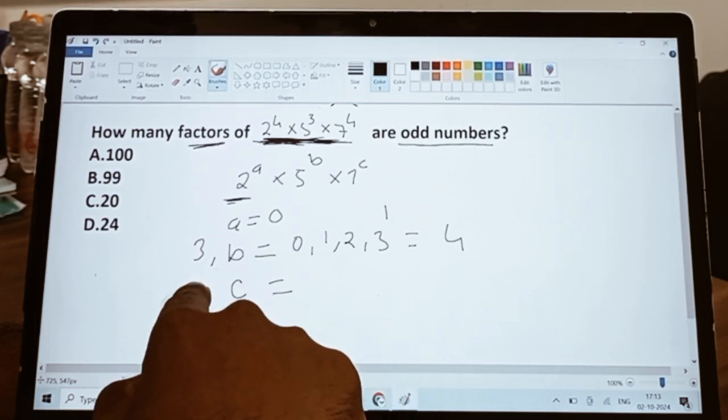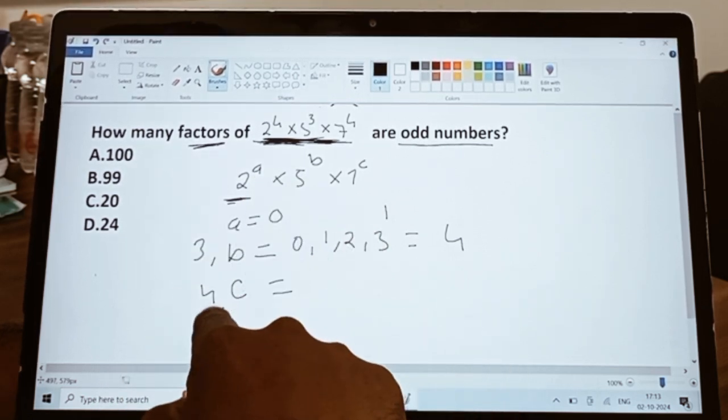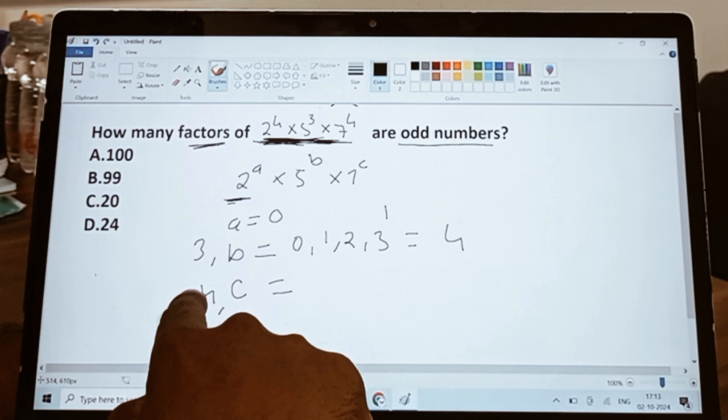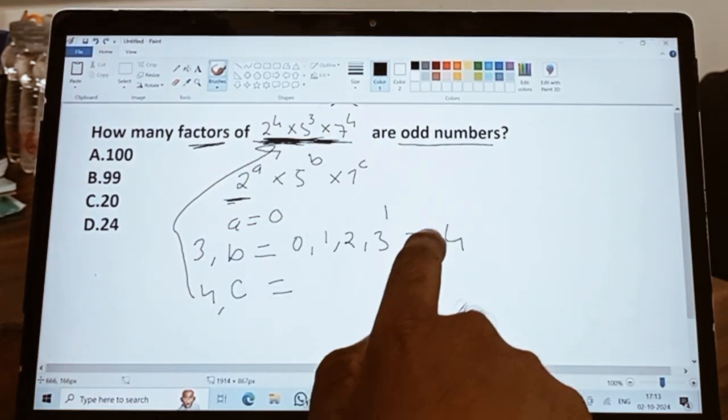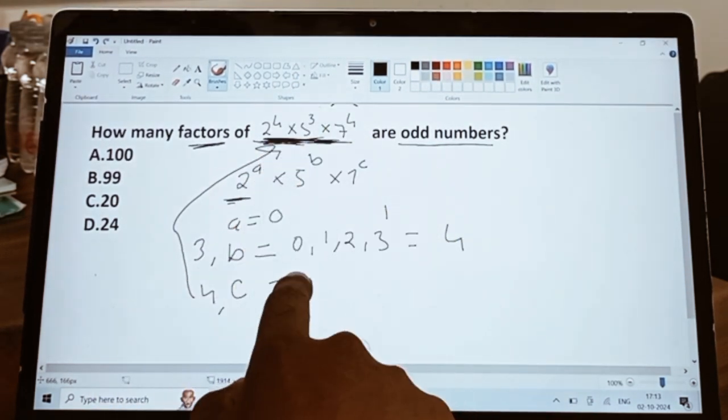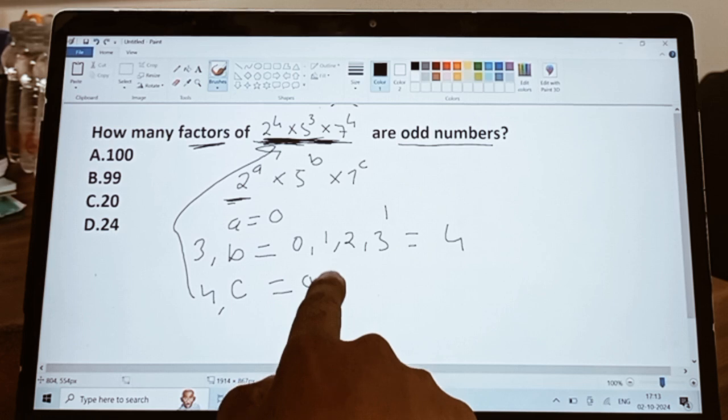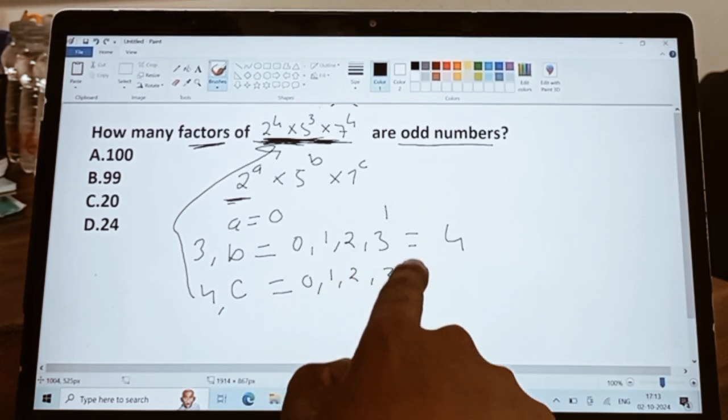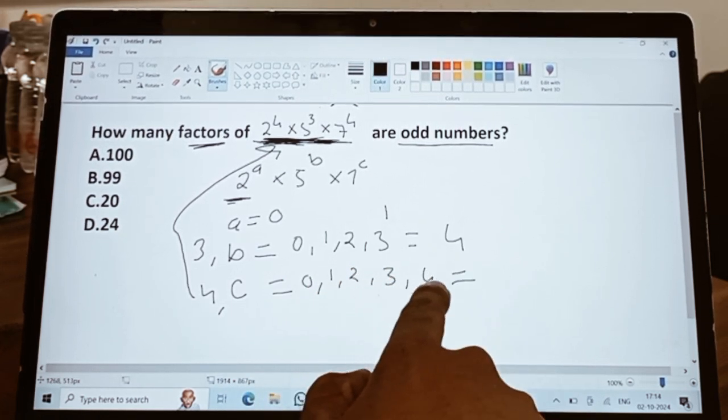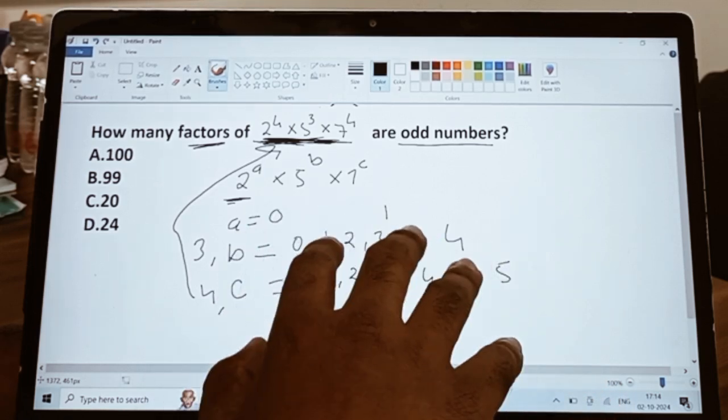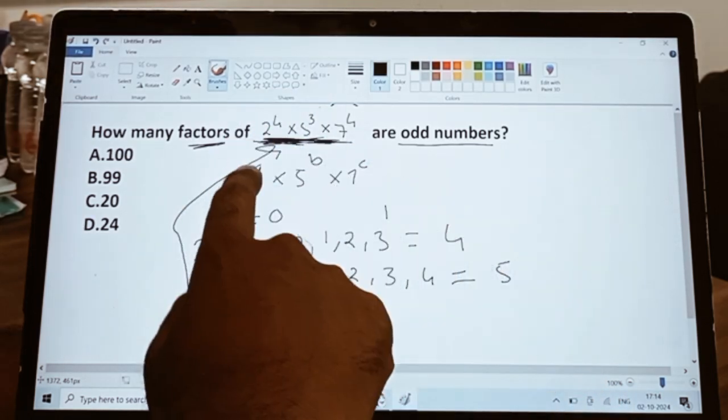Likewise, let's see what about c. The highest value for c is 4, which is given in the question. I am taking this value directly from this question. Now for c, possible values are 0, 1, 2, 3, and 4. So therefore these are five values, right?